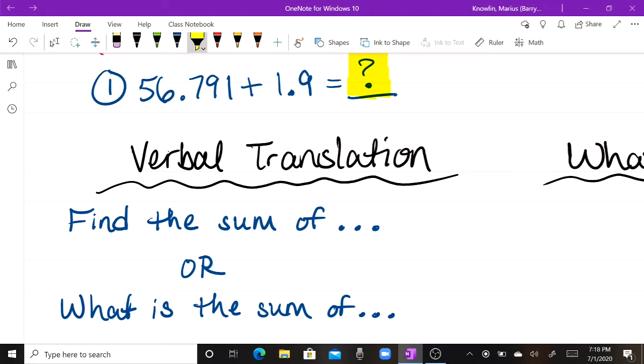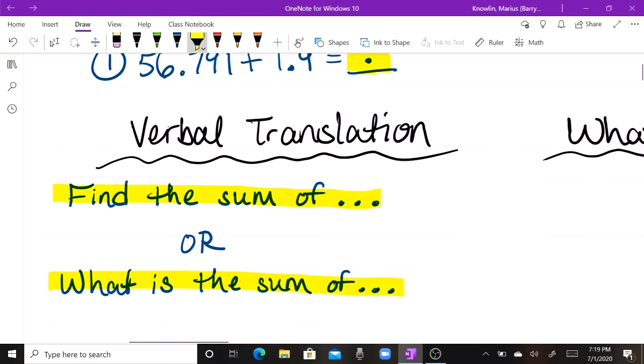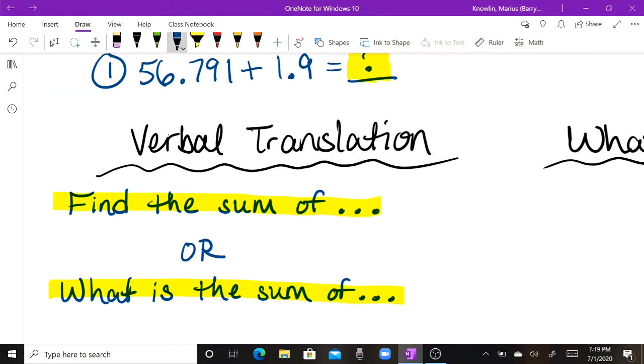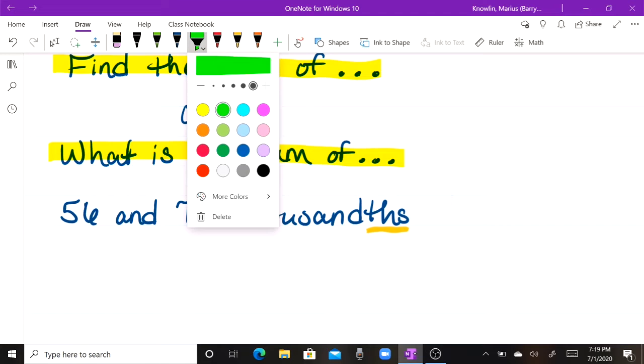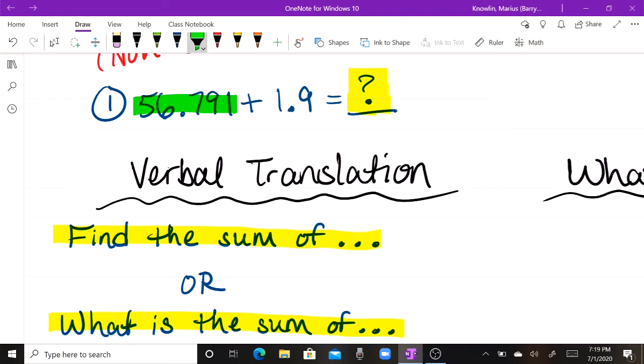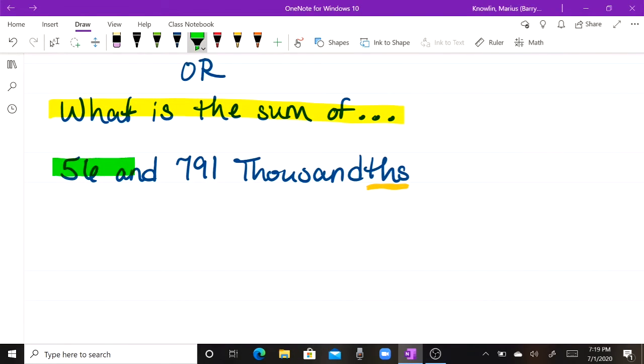All right, so that is the question mark translated. Next, we want to go ahead and get back to the very first number, 56 and 791 thousandths. The main vocabulary that I want to stress here is the decimal place and the decimal place value. So that's 56 and 791 thousandths. 56. The decimal place you say is and, and then 791 thousandths. And when we're discussing place values for decimals, we always want to end with THS. That's very important to make sure we understand that. I'm going to highlight the 56, that first number, 56 and 791 thousandths is green. So when we go back and take a look, that's going to be green.